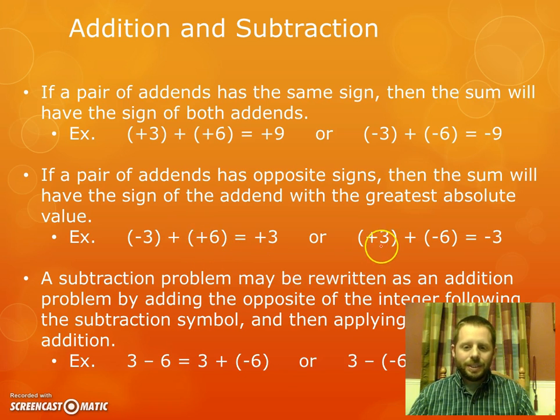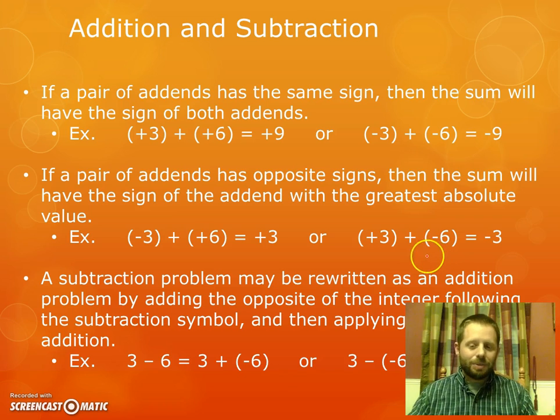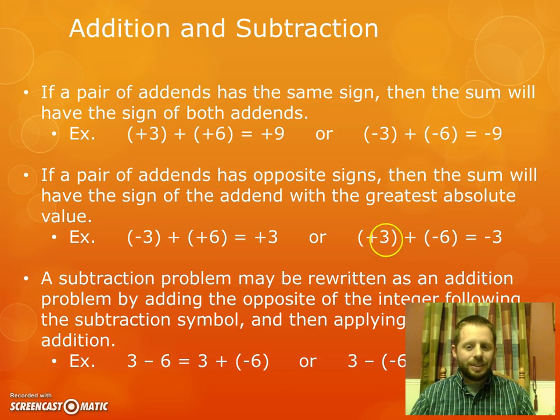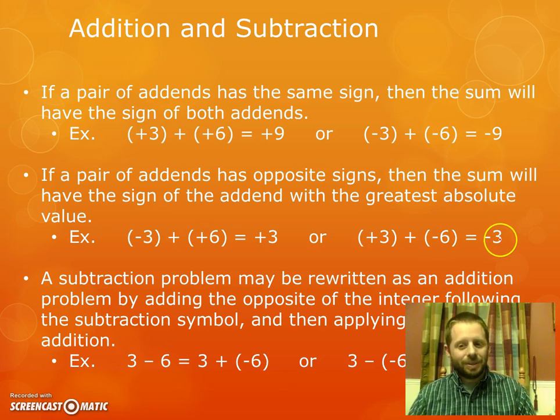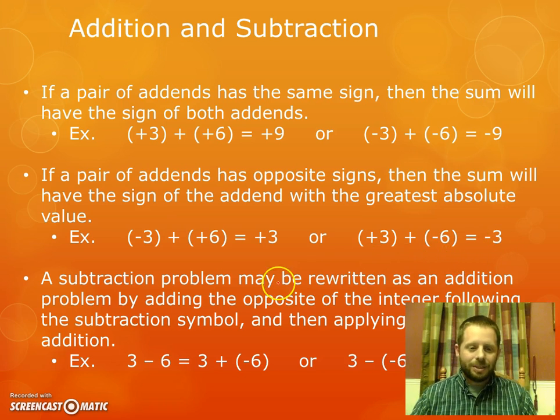Here in this example, positive 3 plus negative 6. Again, the signs are different, so I'm taking the difference of the two numbers. 6 and 3 is 3. But again, my 6 has a greater value, but this time it has a negative sign on it. So that means since it is a further distance from 0, I'm going to take that sign and put that on my answer. So this one would have an answer of negative 3. Again, I like to think in terms of money that helps me to make sense of this. If I have $3 in my pocket and I owe somebody $6, I don't have enough money in my pocket, do I? So I'm actually still going to owe them 3 more dollars. That's kind of the way I like to think about this.